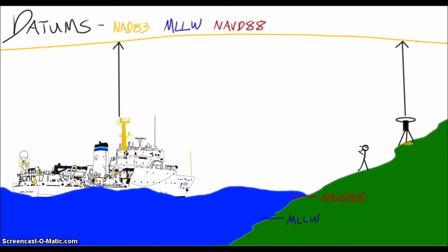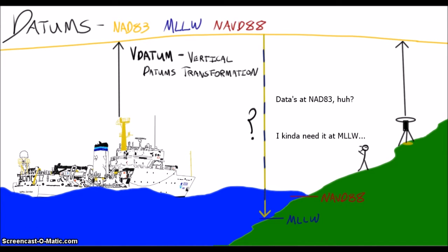But what happens when data is collected in one datum and needs to be shifted to another to suit our needs? This is where methods for moving data from one reference to another, like Vdatum, come in handy. However, before we jump into Vdatum, we should talk a bit more about the three different types of datums we use for NOAA hydrography.